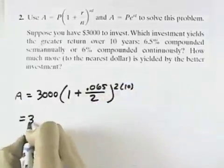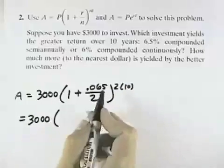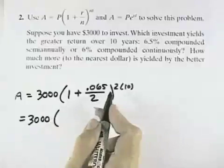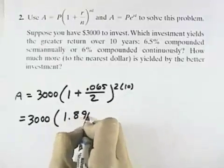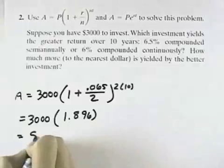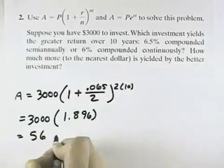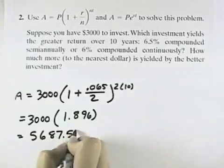If we evaluate that, we'll have $3,000. And if we evaluate the parentheses portion, that comes out to be approximately, when I round it off, 1.896. So that when I multiply these, I get $5,687.51.